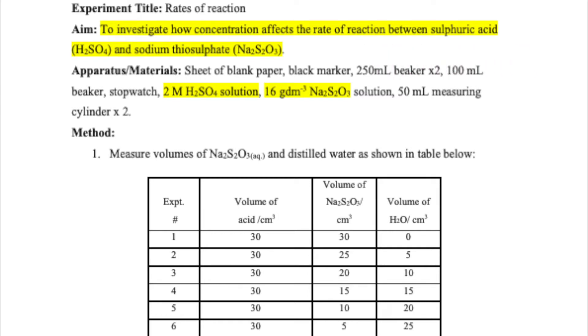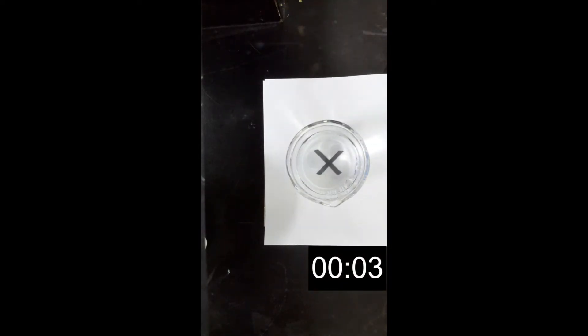We will be reacting sodium thiosulfate with 2 moles per dm³ sulfuric acid. We're going to keep the volume and the concentration of our sulfuric acid constant. But we will manipulate the volume and hence the concentration of our sodium thiosulfate. We will start with 30 ml of sodium thiosulfate — that's 0.1 mole per dm³ — pour that into a 100 ml beaker and put that beaker on top of a piece of paper on which we mark an X. We will then carefully pour 30 ml of our sulfuric acid into this and immediately start our stopwatch.